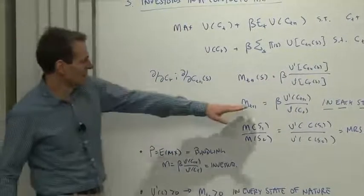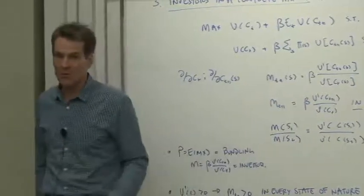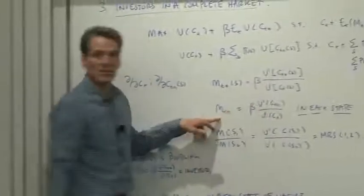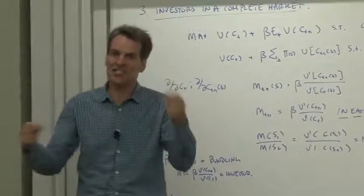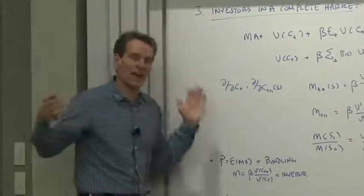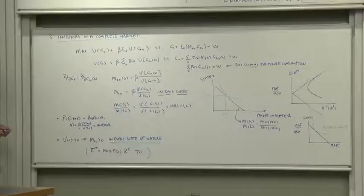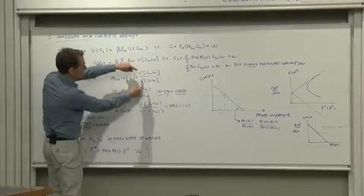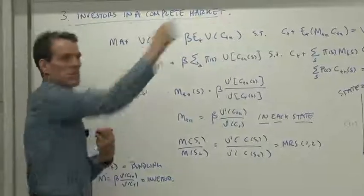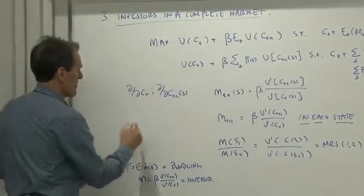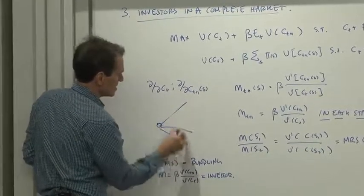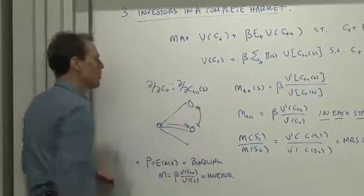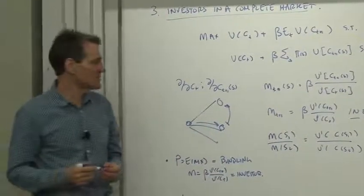So we often write that as mt plus one is beta u prime of ct plus one over u prime of ct, but watch out. When we say two random variables are equal, that means in each state they're equal, not just they're equal on average or something of the sort. We can also divide the things at time t plus one. This expresses time t to time t plus one in a particular state. Rather than thinking about time t to time t plus one in a particular state, why don't we think about one state versus another at time t plus one?